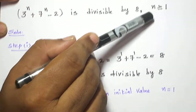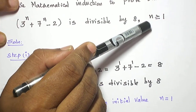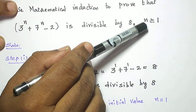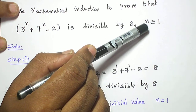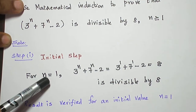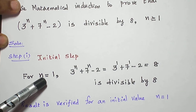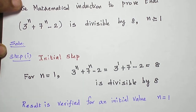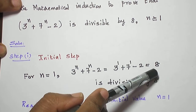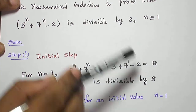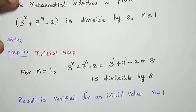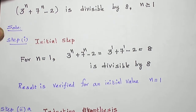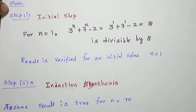We are clearly given n greater or equal to 1, so n is equal to 1 is the starting initial value we have to take. For n is equal to 1, what is the value of this expression? 3 power n plus 7 power n minus 2 — it is 8. 8 is divisible by 8, that is natural. So the result is verified for the initial value n is equal to 1.